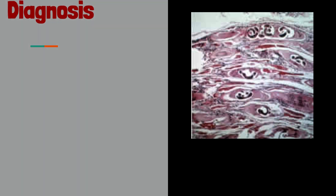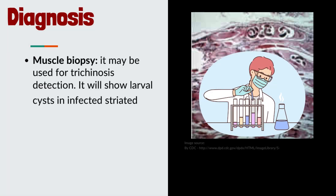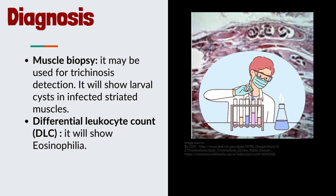Diagnosis: the following tests confirm it. Muscle biopsy may be used for trichinosis detection; it will show larval cysts in infected striated muscles. Differential leukocyte count will show eosinophilia.